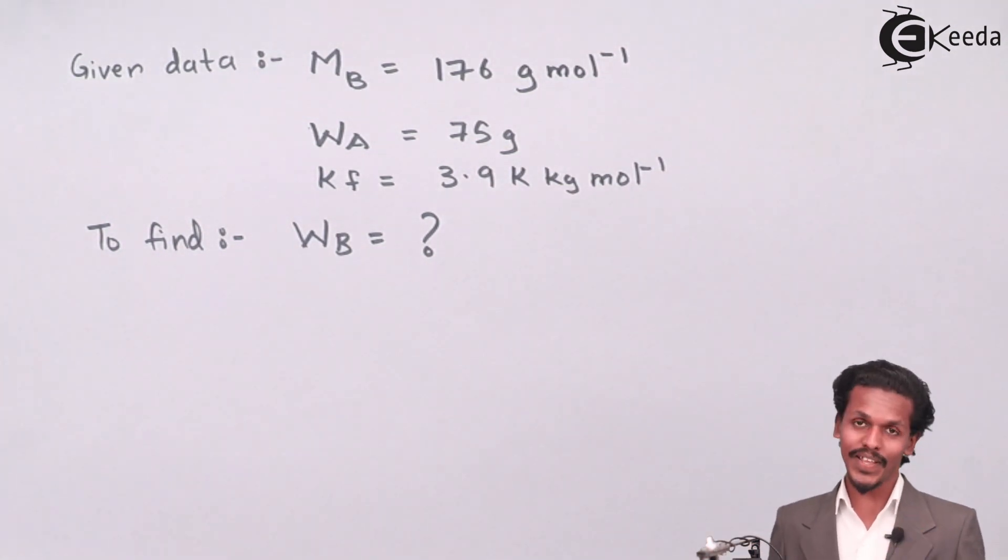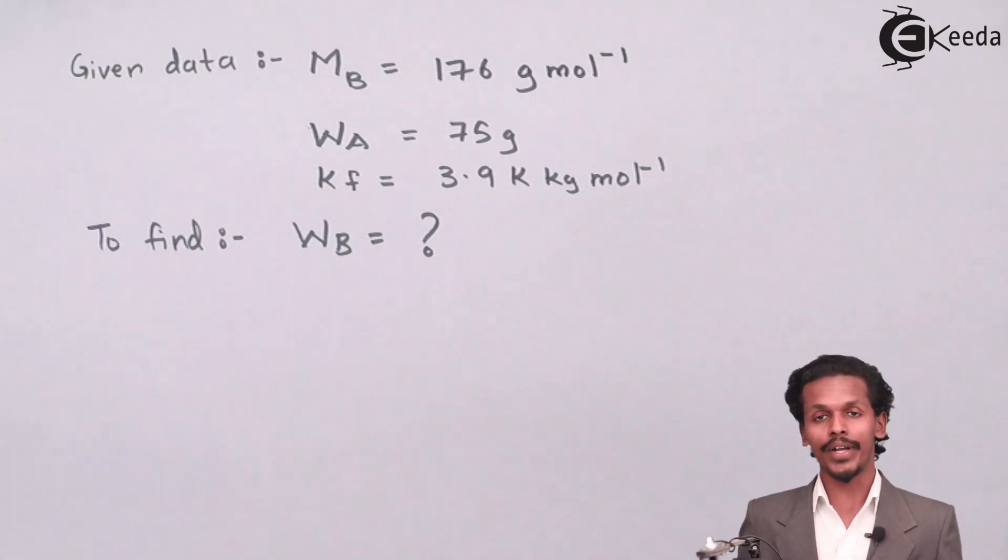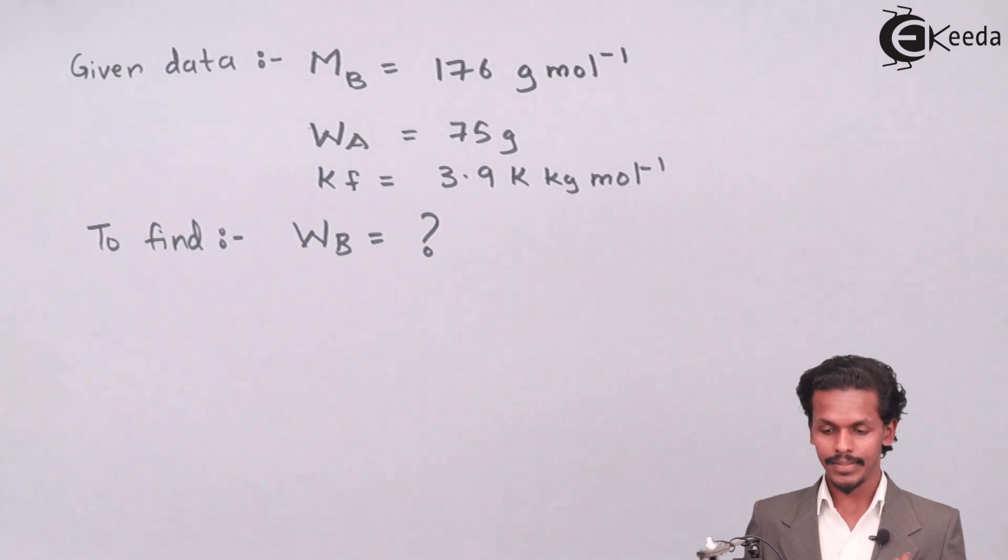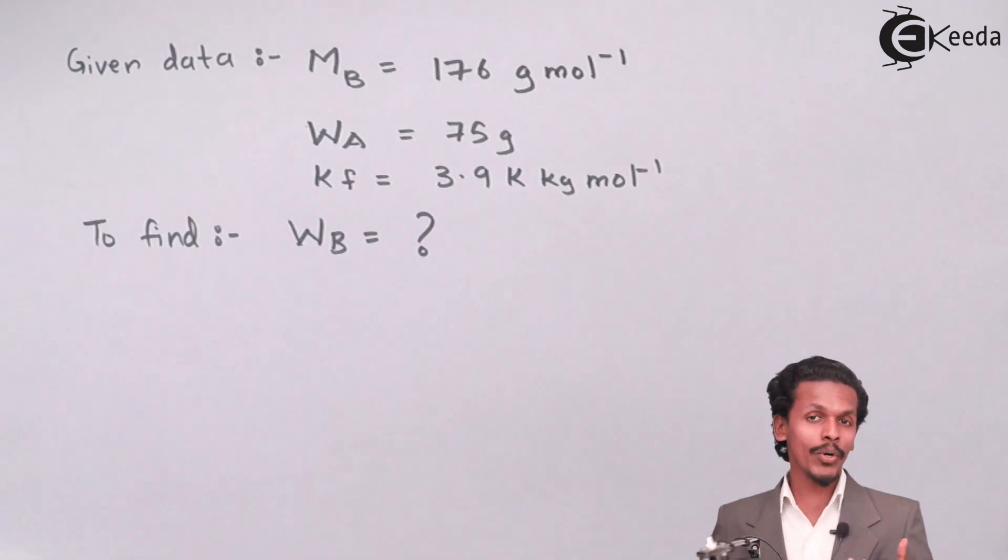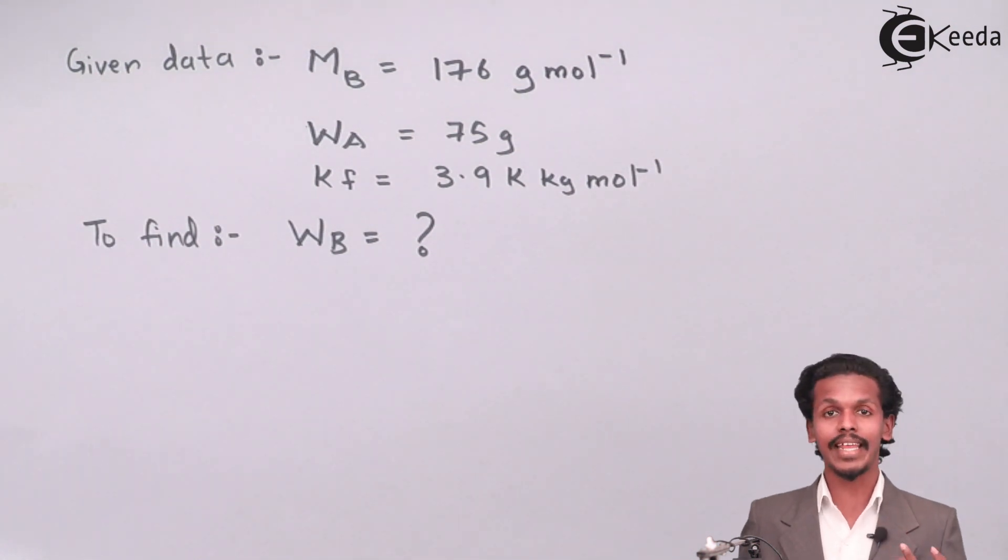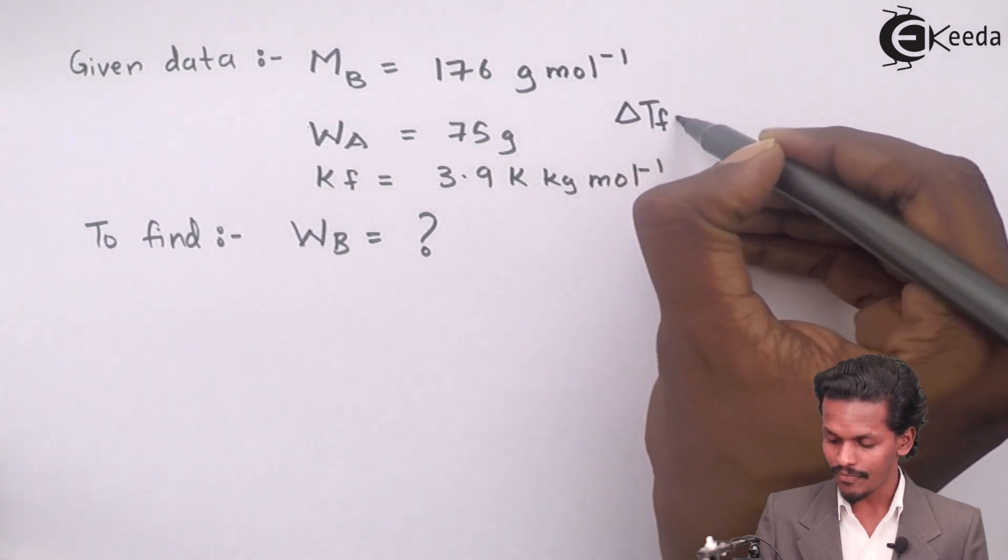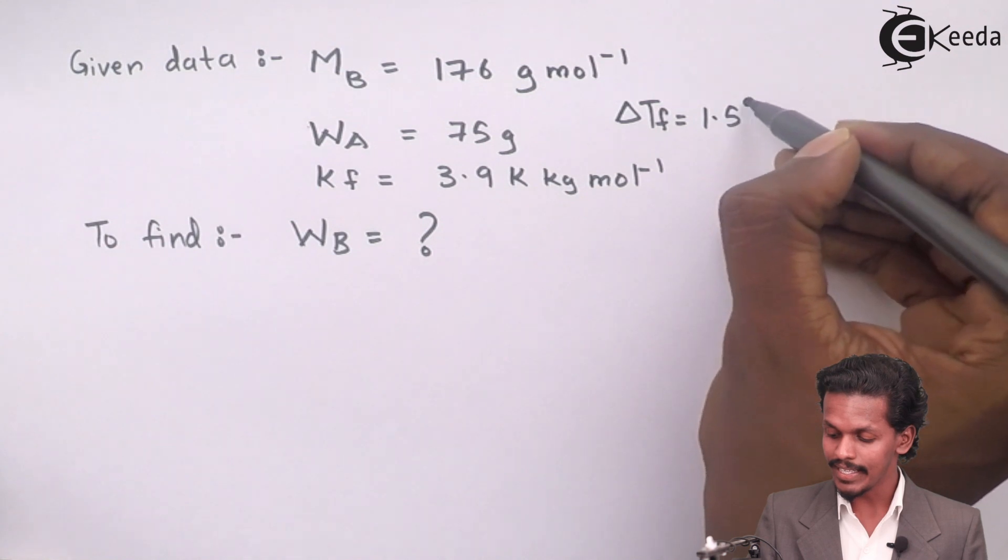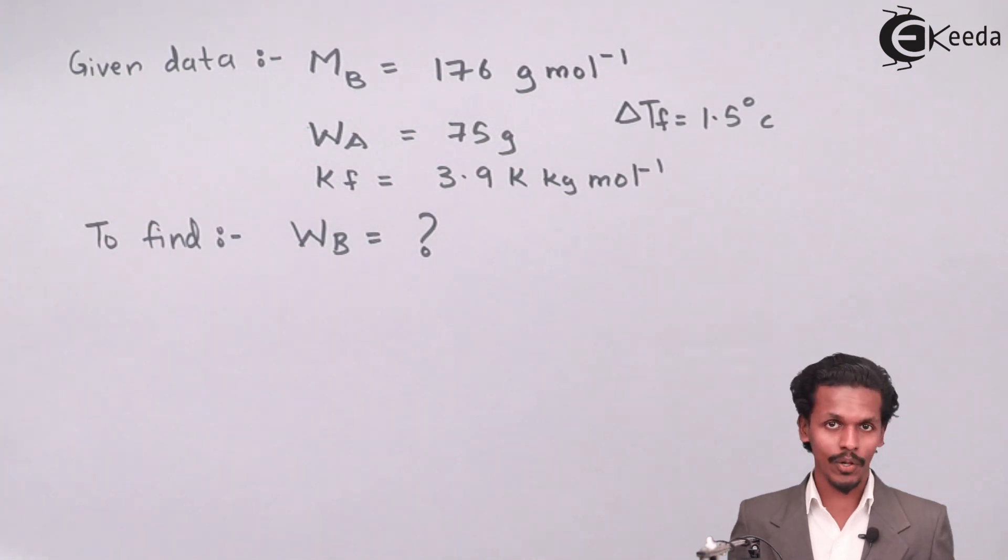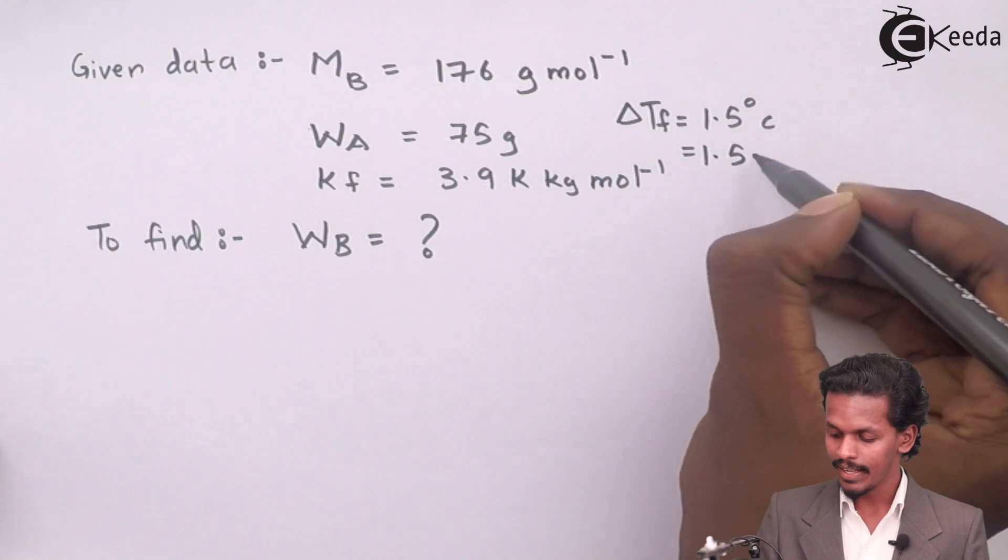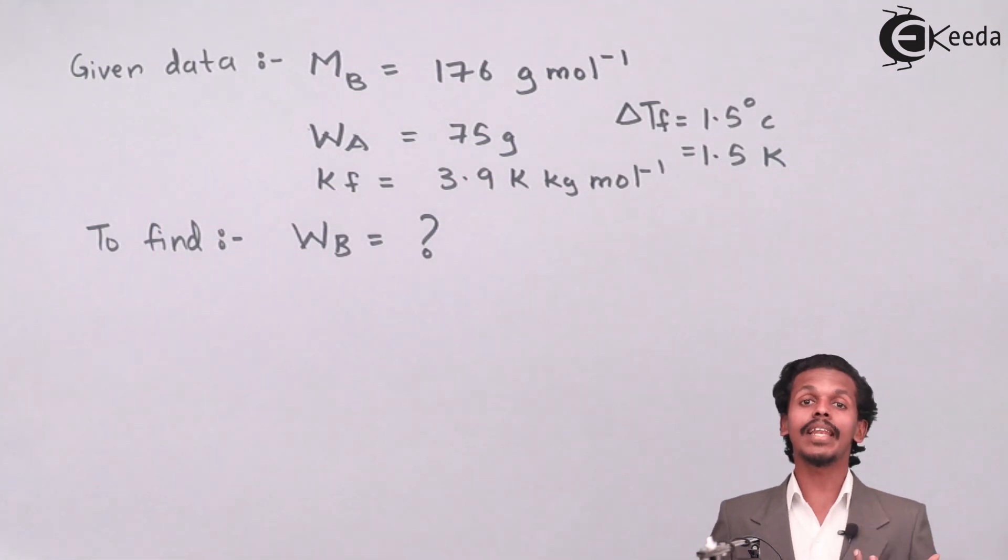One more data is given in the form of depression in freezing point, that is delta TF which is 1.5 degree Celsius. Since it is a difference we can make it into Kelvin also, so 1.5 Kelvin is the answer for delta TF.